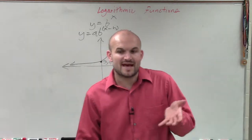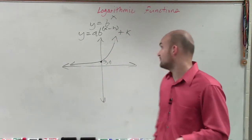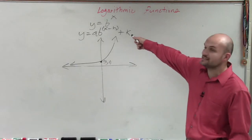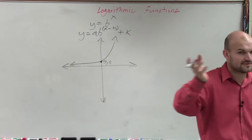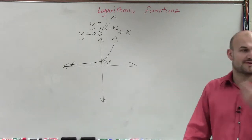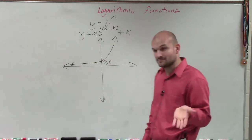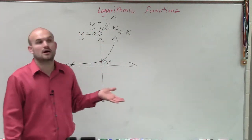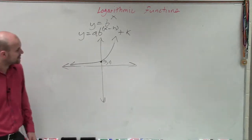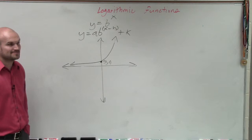Remember, if a was negative, that reflected over the x-axis. If we had a negative inside our function, that was going to reflect it about the y-axis. Remember, h shifted the graph left or right in the opposite direction, and k shifts the graph up or down. So that, ladies and gentlemen, is what we have for our exponential functions.